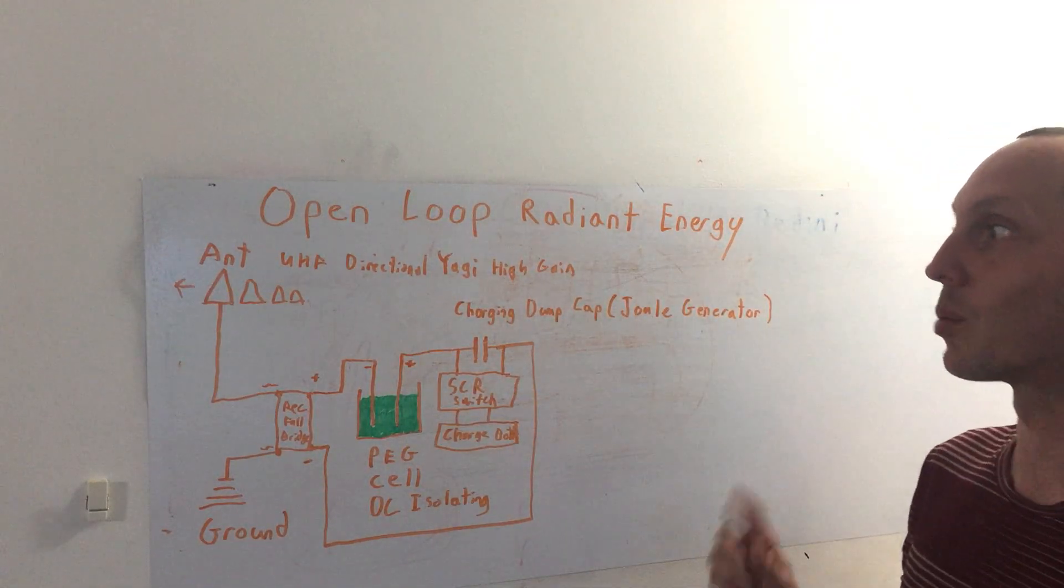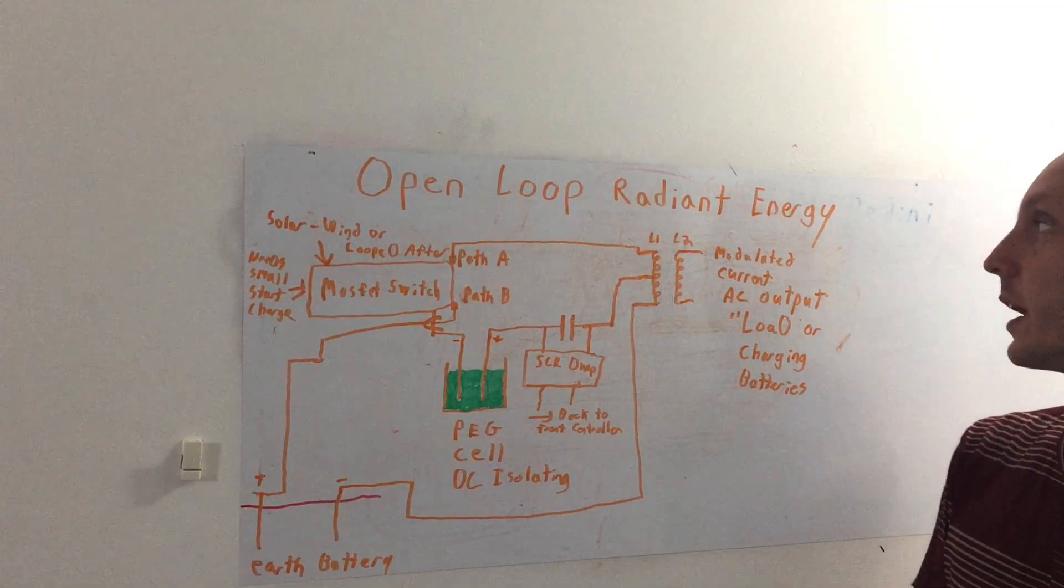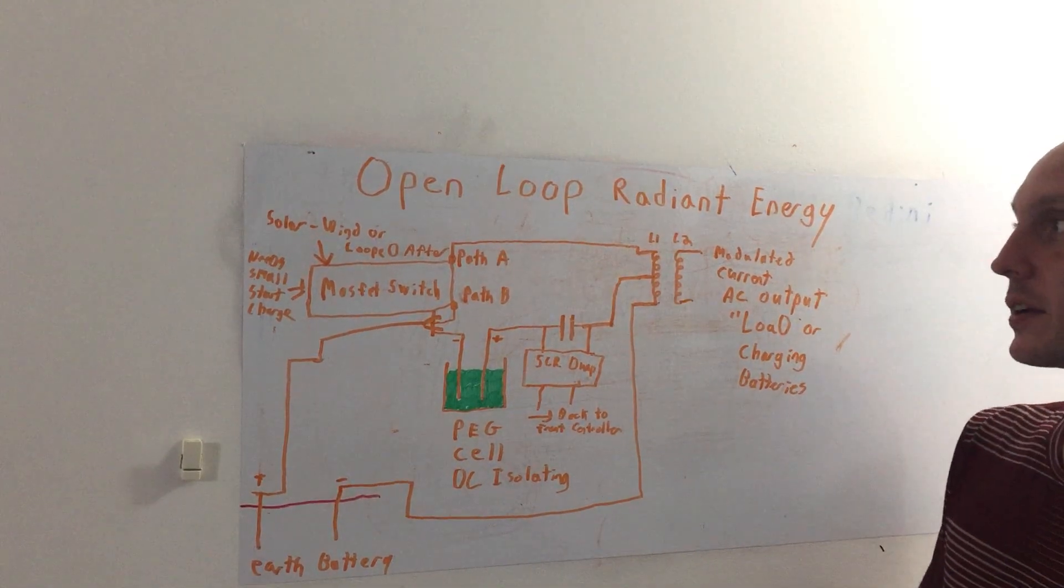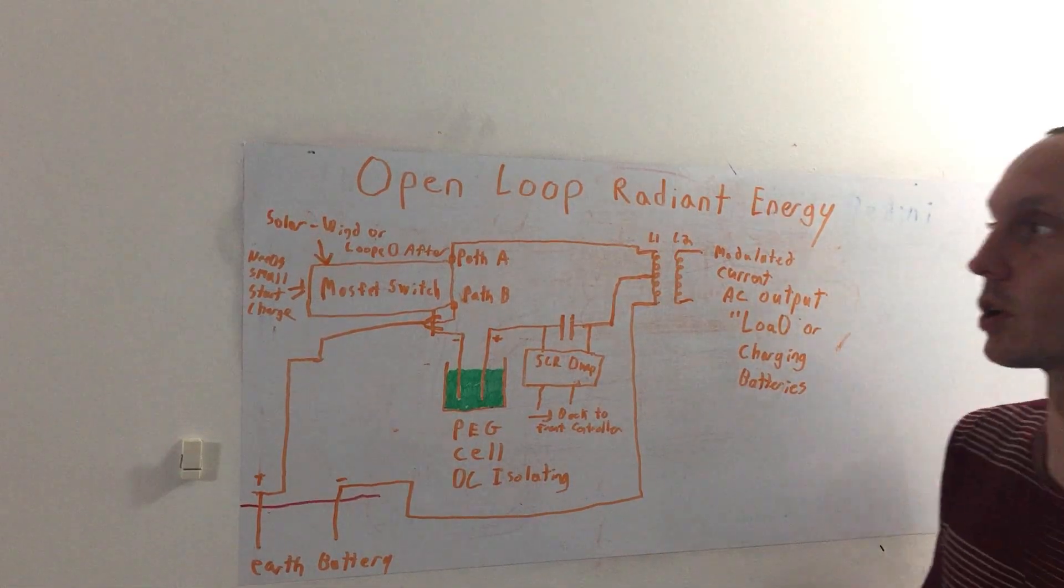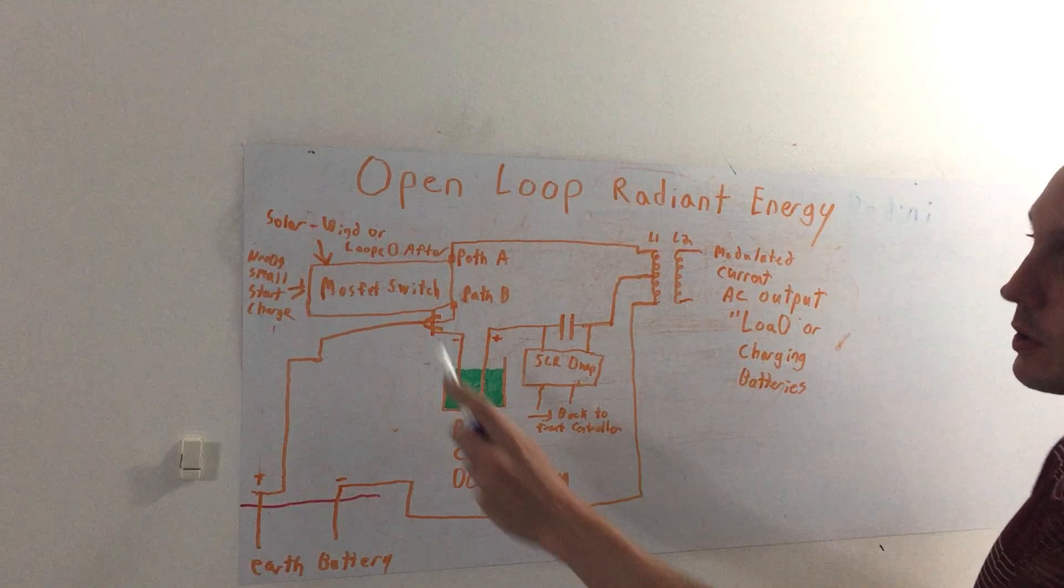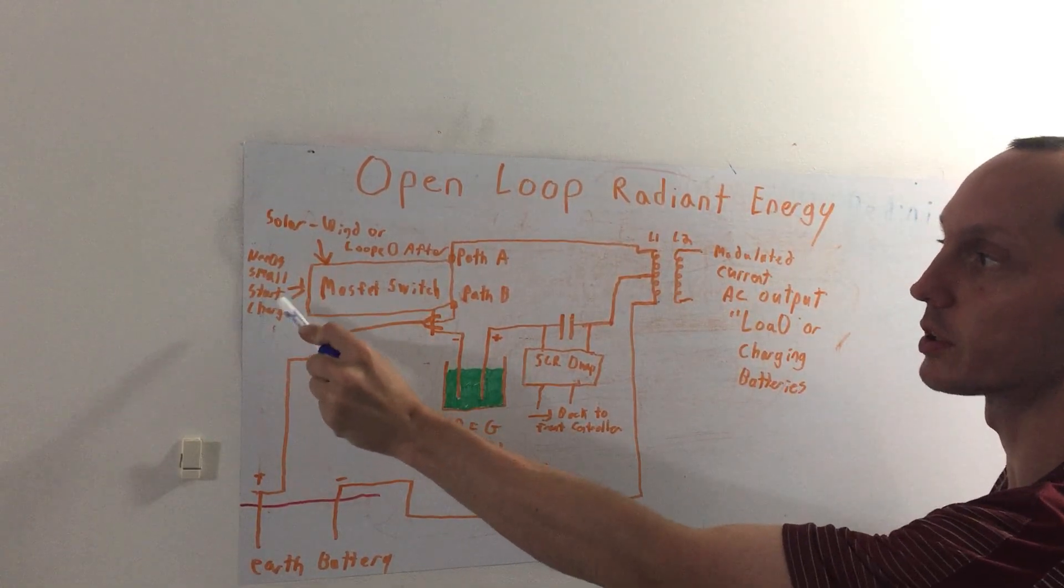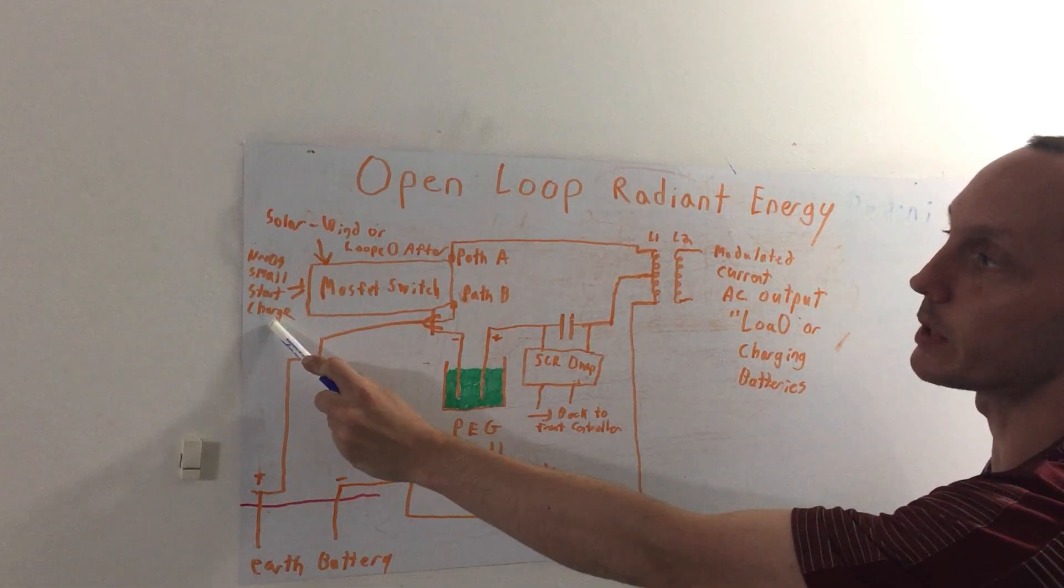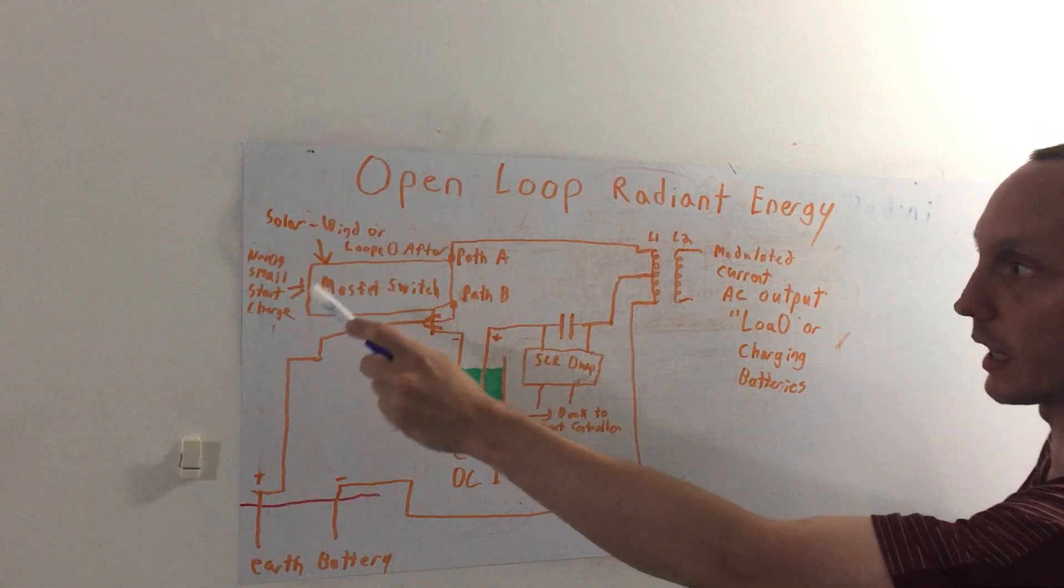Here's a version of the open loop radiant energy converter if you don't have RF nearby. You could still take advantage of the earth's radiant energy instead. This is a bit more complicated circuit using a MOSFET switch, so you're going to have to have a little bit of a small startup charge. That could be a small battery that will run for a month. It could even be rechargeable with wind, solar, or even a self loop once you get it going.